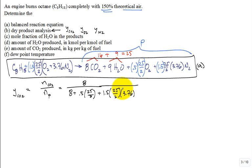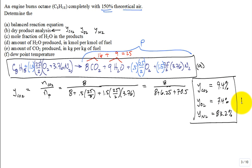And you can compute that? And you can compute that sometimes I'll do it in two steps. So I'll have 8 divided by 8 plus 6.25 plus 70.5 and then I'll have Y of CO2 is equal to 9.4%. And then you have the mole fraction of the oxygen and that would be 7.4% and the mole fraction of the nitrogen 83.2%. Box that. That's the answer to part B.